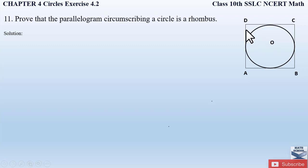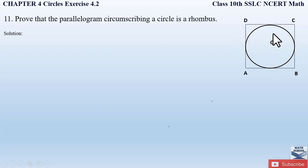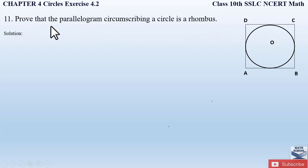The properties of a parallelogram are that opposite sides are parallel and equal. Whereas in a rhombus, all four sides are equal. So here we basically have to prove that all four sides of this parallelogram are equal in order to show it forms a rhombus. Since they have given us 'prove that,' we will first write what is given, then what we have to prove, and then the proof.